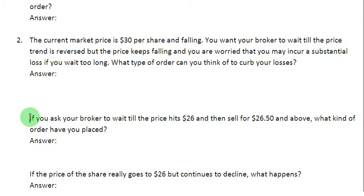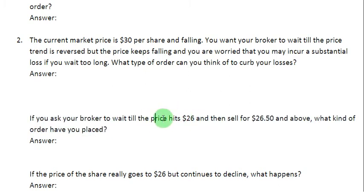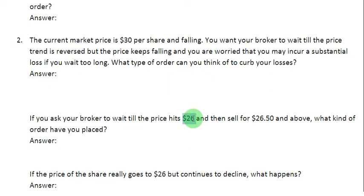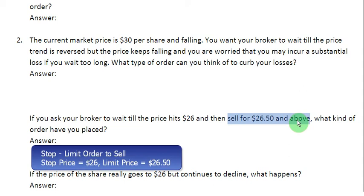Now, if you ask your broker to wait till the price hits $26 and then sell for $26.50 and above, what kind of order have you placed? You have specified $26 as your stop price, because you have asked your broker to wait till the price hits $26. Then further, you are instructing your broker to sell for $26.50 and above, making $26.50 your limit price. All in all, this order becomes a stop limit order to sell, with a stop price of $26 and a limit price of $26.50.